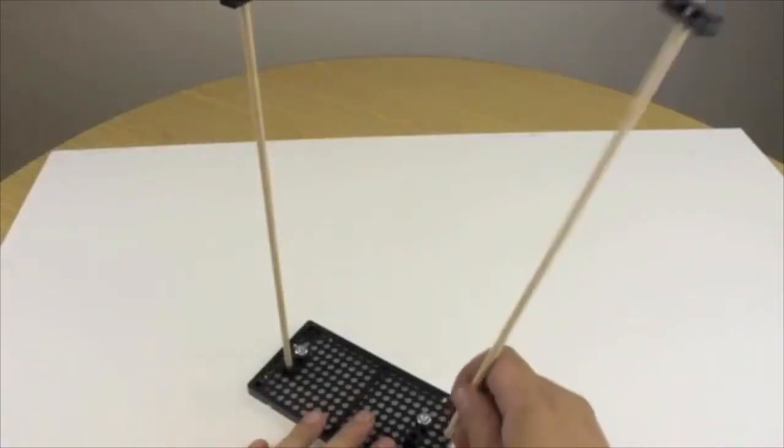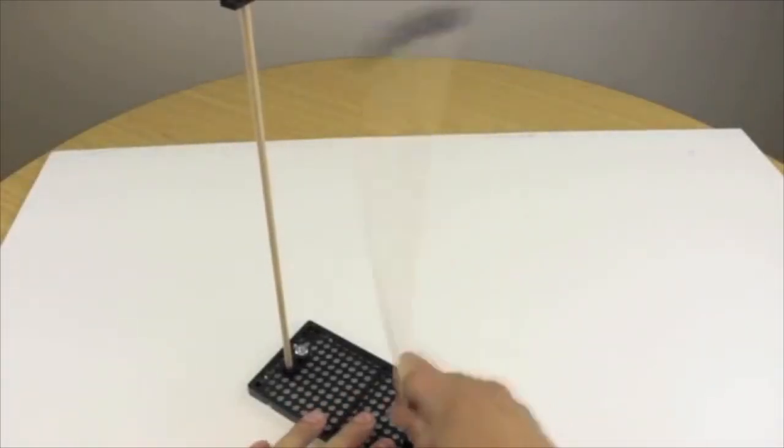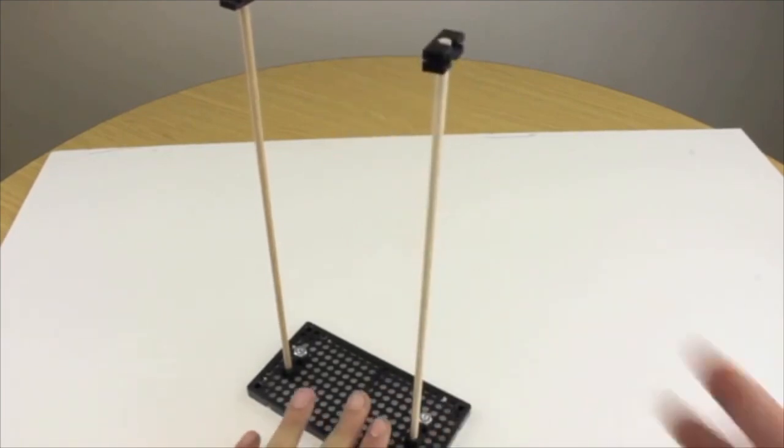Now that you have both dowels go ahead and place them into the perpendicular blocks attached to the hole plate. Make sure that the perpendicular blocks are facing the same direction.